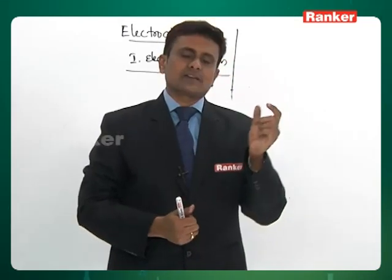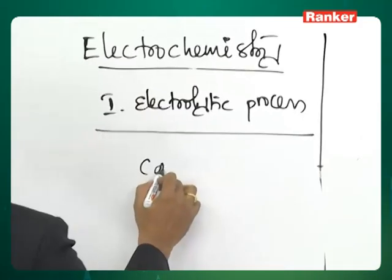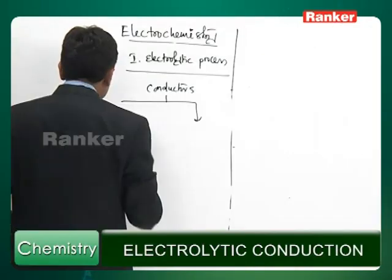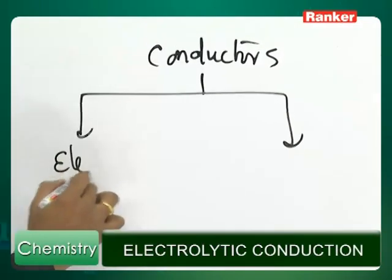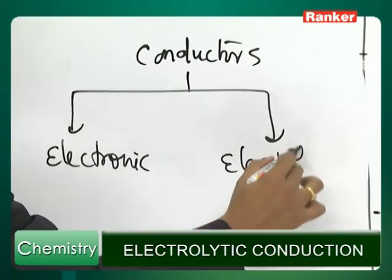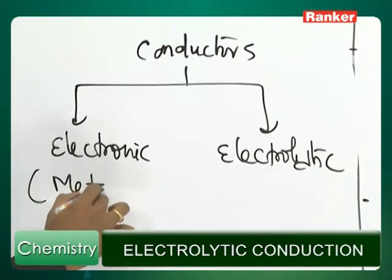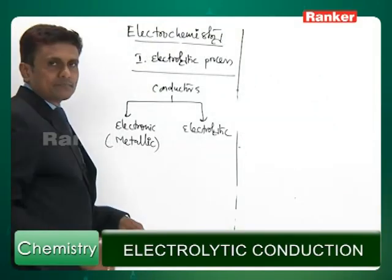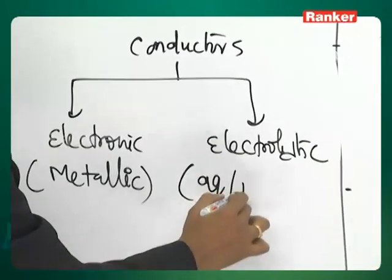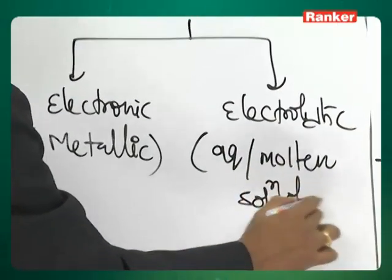We are aware that there are two types of conductors: one is called electronic and the other is electrolytic. Electronic conductors are also called metallic conductors, and electrolytic conductors are aqueous or molten solutions of salts.